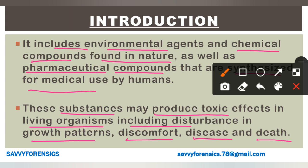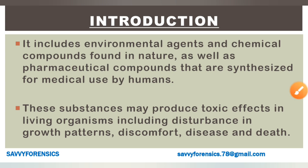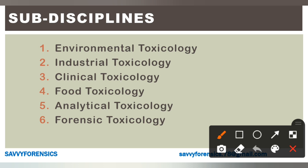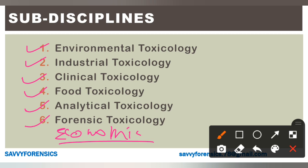Basically, toxic substances can create disturbances in your body, in your body's growth, cause a lot of diseases, and can also cause death. So this is a basic point of toxicology. Now let's talk about the sub-disciplines of toxicology. These are: environmental toxicology, industrial toxicology, clinical toxicology, food toxicology, analytical toxicology, forensic toxicology, and economic toxicology.